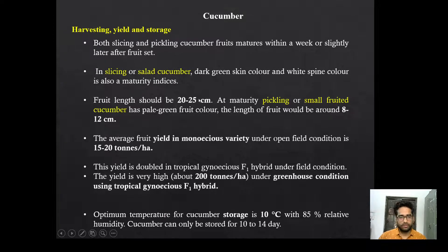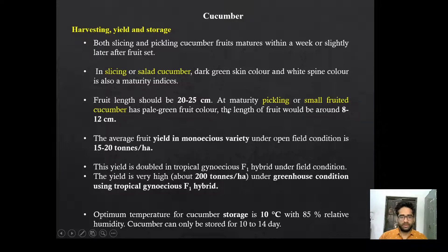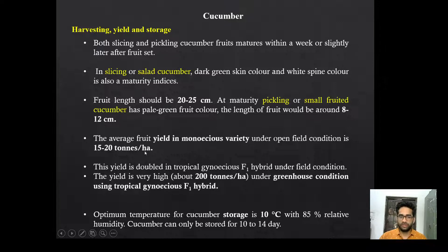Now harvesting, yield, and storage. Both slicing and pickling cucumber fruits mature within a week or slightly later after fruit set. For slicing cucumber, dark green skin color with white spines are the maturity indices; fruit length should be 20 to 25 cm. For pickling, a small-fruited cucumber — the maturity indices are pale green fruit color and length of 8 to 12 cm. Average fruit yield in monoecious variety under open conditions is 15 to 20 tons per hectare. In case of tropical gynoecious F1 hybrid, yield is doubled. Under greenhouse conditions using tropical gynoecious F1 hybrid, yield can reach around 200 tons per hectare.